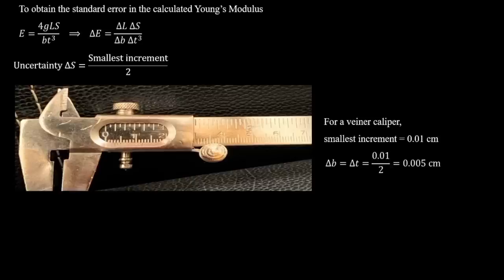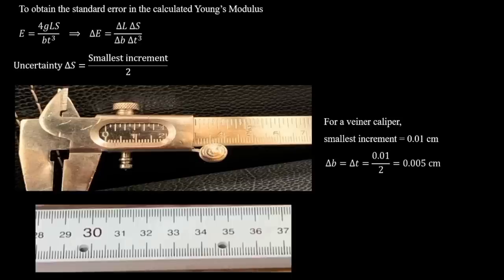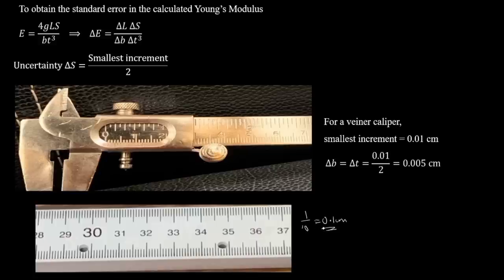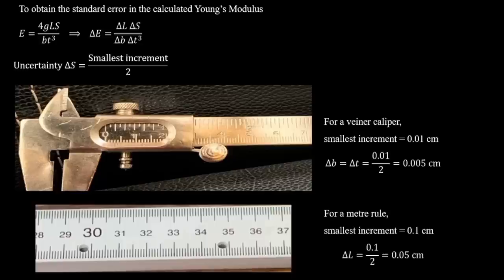Now consider the error in the meter rule. Between 30 cm and 31 cm there are 10 small divisions, making the smallest increment 0.1 centimeters. Since there is no vernier scale on a meter rule, this is the smallest increment. Therefore, the error in the meter rule is 0.1 / 2 = 0.05 centimeters.